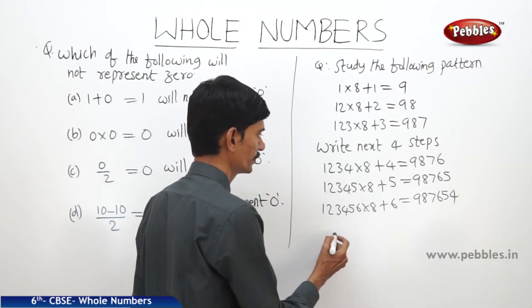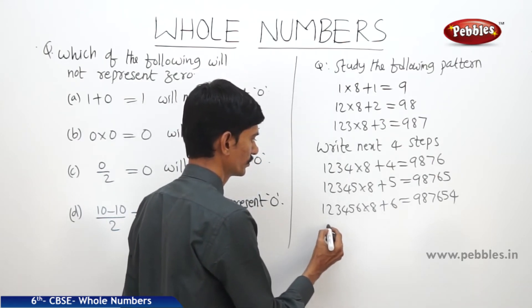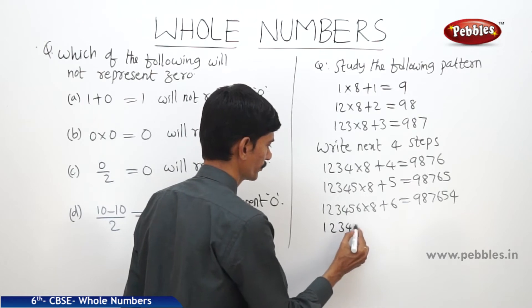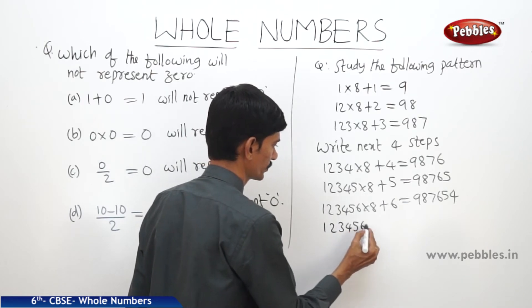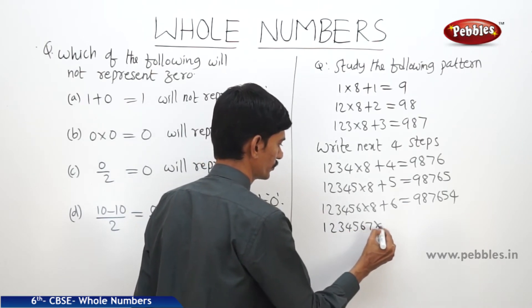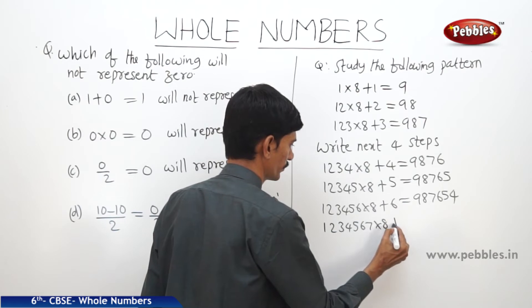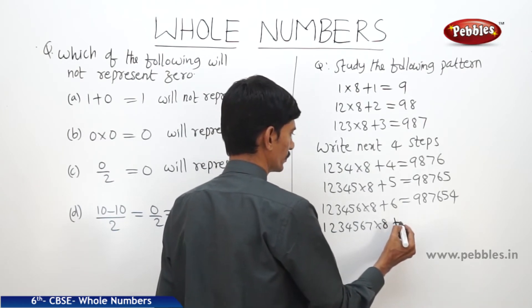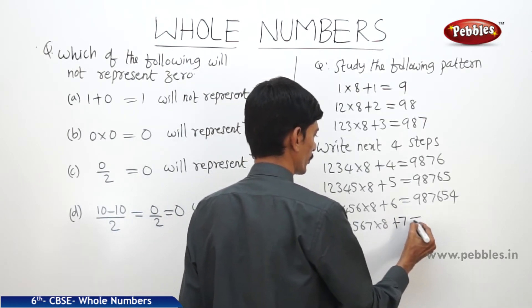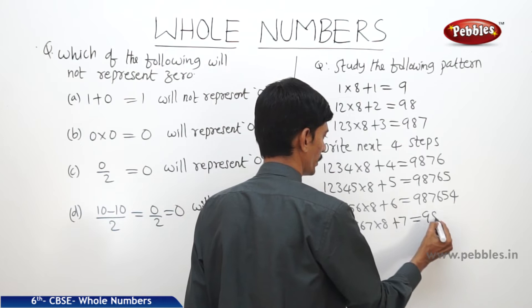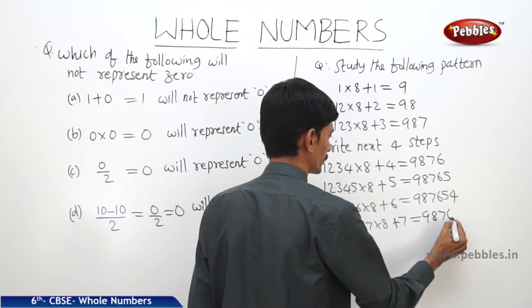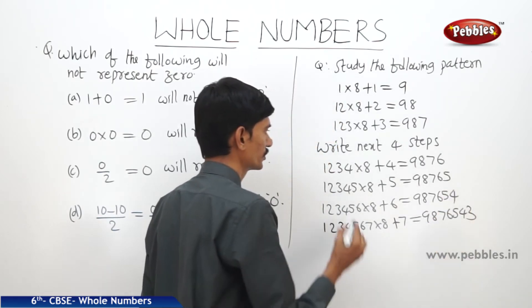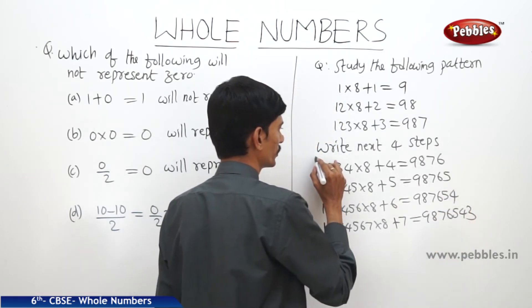The final step is 1234567 into 8 plus 7 equals 9876543. This is the pattern observed.